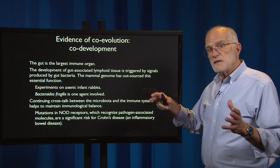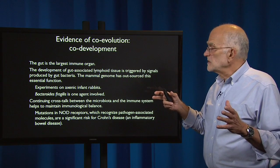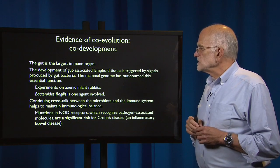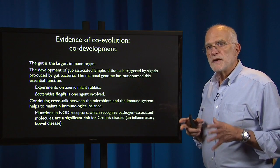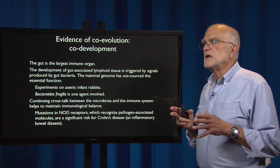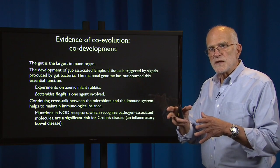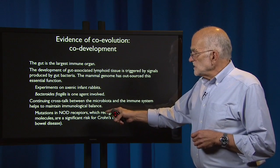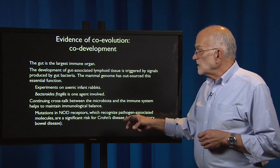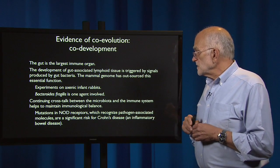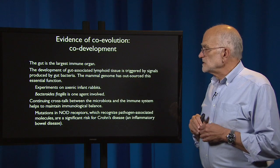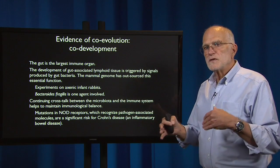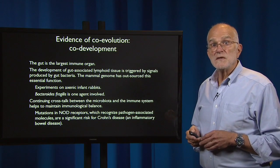As the organism and its microbiota continue to develop, there is crosstalk between the microbiota and the immune system, and that helps to maintain immunological balance. This is the role of the immune system in managing the microbiota — not just in defending against pathogens, but managing the microbiota. Mutations in NOD-receptors, which recognize pathogen-associated molecules, are a significant risk for Crohn's disease, an inflammatory bowel disease. So if you interrupt this communication between the microbiota and the immune system, it can induce a disease state in the patient.